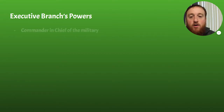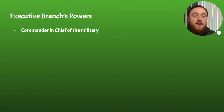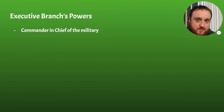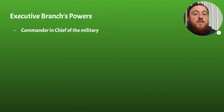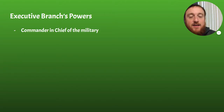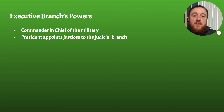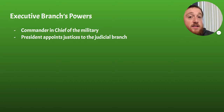Now let's talk about the executive branch and what powers it has over the other two branches. The first is that the president is the commander in chief of the military, meaning he is the ultimate authority over the military and all commands must be followed. However, remember that Congress is the one that declares war — so the president is commander in chief but cannot declare war. That is the key check against the executive branch.